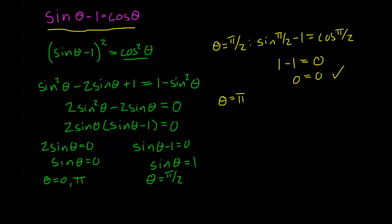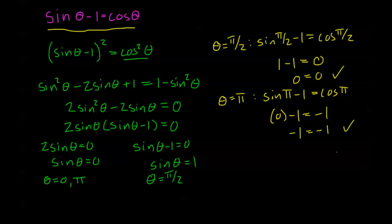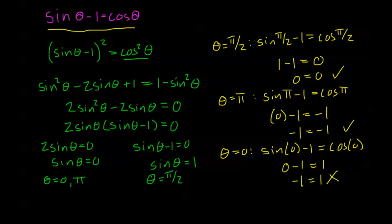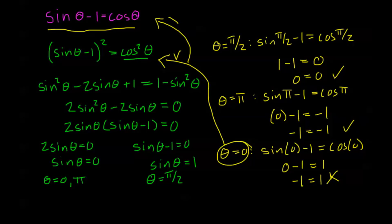For theta equals 0: sine(0) minus 1 equals cosine(0) gives 0 minus 1 on the left, but cosine(0) is positive 1. So we get negative 1 equals positive 1, which is false. This is our extraneous solution — theta equals 0 satisfies the squared equation but not the original.